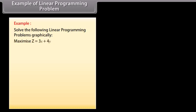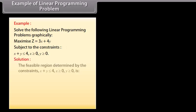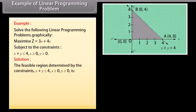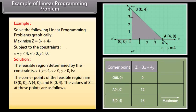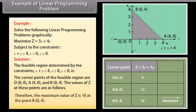Example: solve graphically — maximize Z = 3X + 4Y subject to X + Y ≤ 4, X ≥ 0, Y ≥ 0. Solution: the feasible region is determined by the constraints. The corner points are O(0,0), A(4,0), and B(0,4). The values of Z at these points are evaluated, and the maximum value of Z is 16 at point B(0,4).